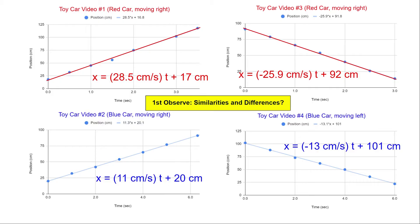Here I've got the graphical representations — position versus time graphs for each of the four different cars — and the linear equations that came from the data you collected. The first thing we want to do when we look at all of our data analysis is ask the question: what's the same about our data, our graphs, or equations, and what's different? In our conversations about those similarities and differences we can hopefully learn more.